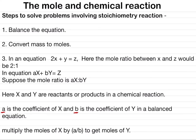In order to solve problems involving stoichiometry, we should follow these steps. Step number one: balance the equation. If the equation is not balanced, we have to balance it, because an unbalanced equation may give us a wrong answer. We have to check whether the reactants are equal to the products.